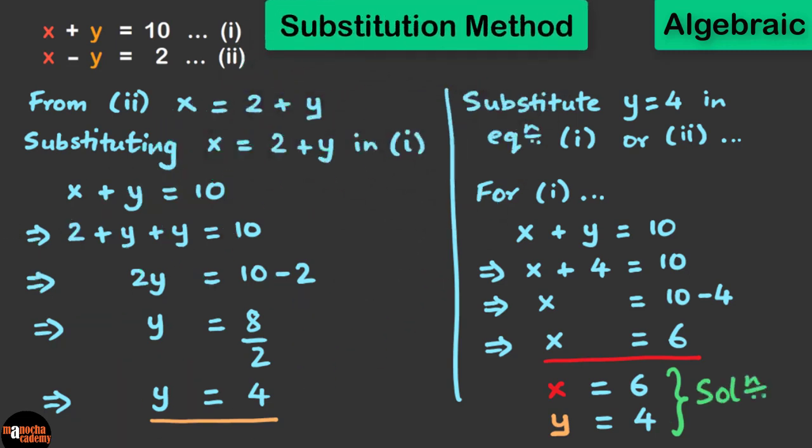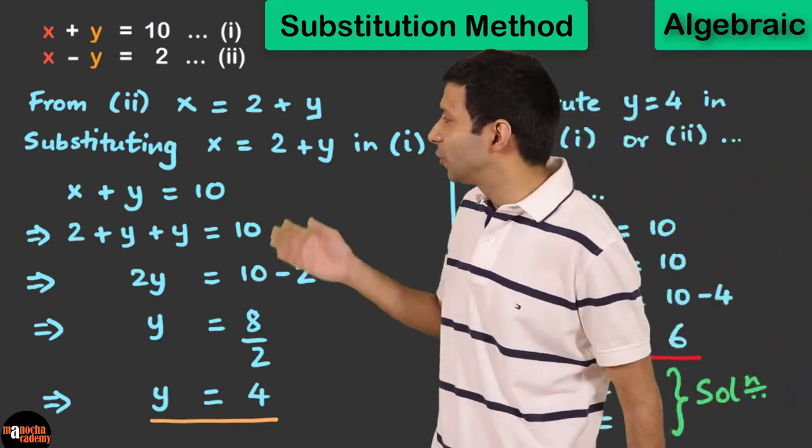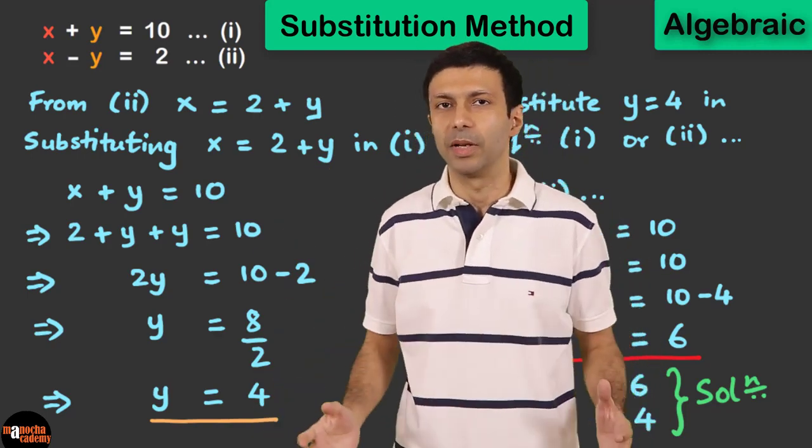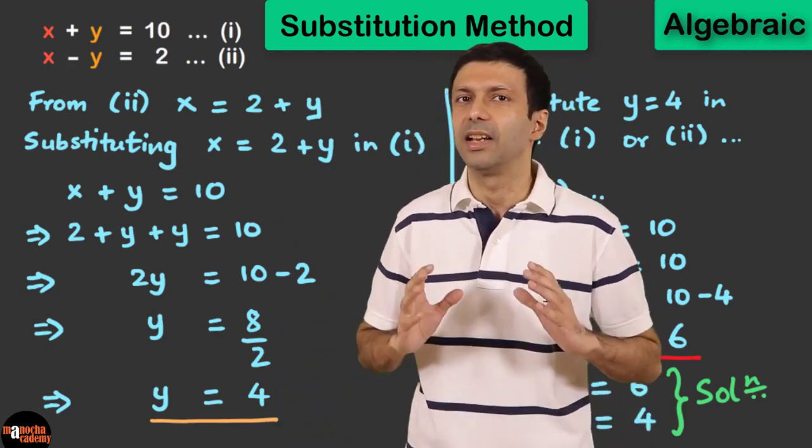This is called substitution method. We are substituting one variable in terms of the other. This is a simple algebraic method that we saw here. There are other algebraic methods but we'll do that in another video.